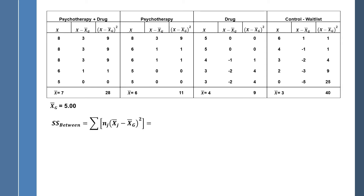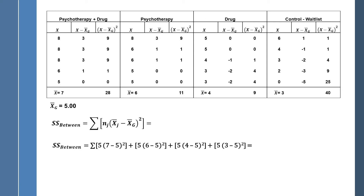The next step is to compute the sum of squares between. We take the mean of each group, subtract the grand mean, square it, and multiply by the number of people in that group. For the first group: 7 minus 5 squared times 5, because there are 5 people. Each group mean is inside the parentheses; subtract the grand mean, square that value, multiply by the number of people in that group. Each group has 5 people. The sum of squares between comes out to be 50.